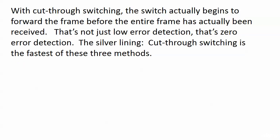At the other end of the spectrum is cut-through switching. The switch actually begins to forward the frame before the entire frame has even been received. This means there is zero error detection — absolutely none. The silver lining is that cut-through switching is the fastest of the three methods, but that's a pretty high price to pay for speed: having absolutely no error detection at all.